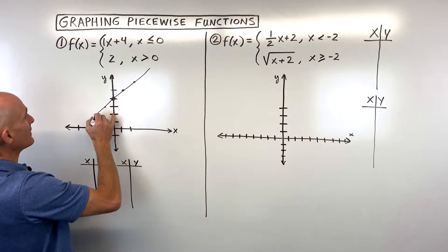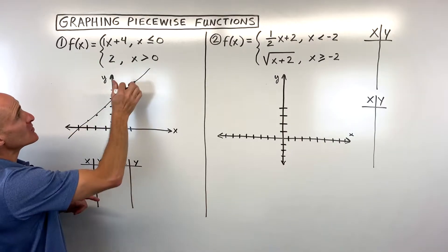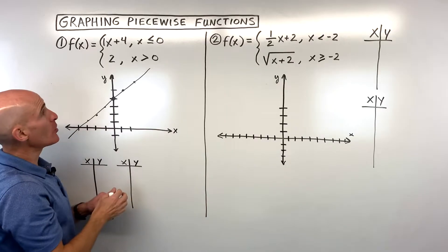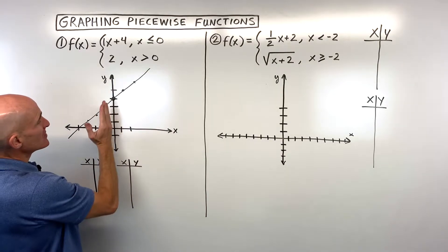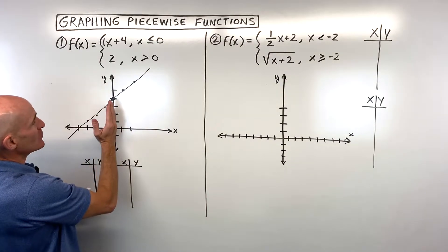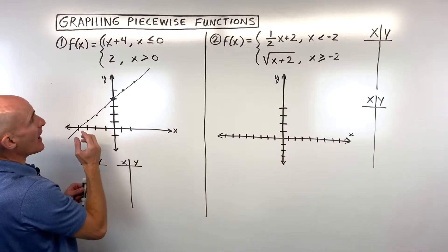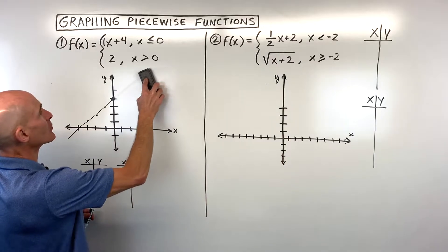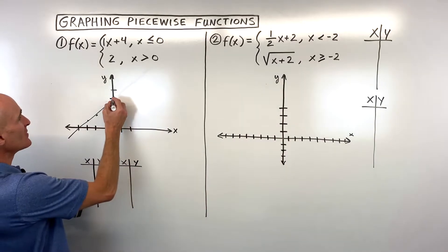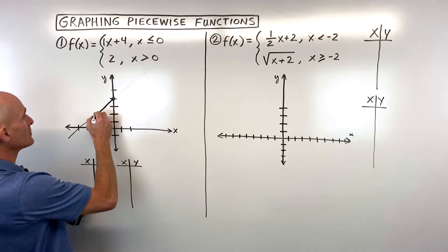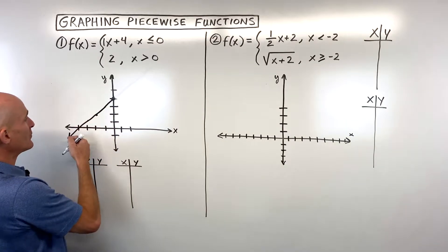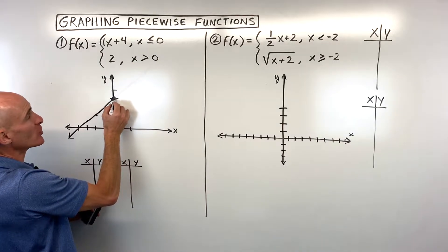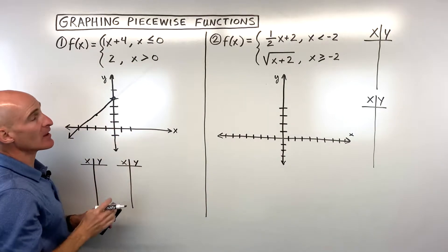We want the part of the line where x is less than or equal to 0 — meaning at 0 or to the left. The part to the right we don't want, so let's erase that. Since it's 'equal to,' we use a closed circle at 0, and the arrow keeps going to the left.